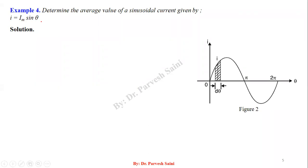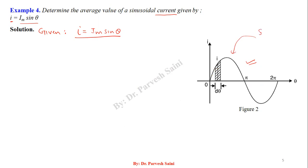Numerical 4: we are asked to find the average value of a sinusoidal current represented by i = Im sin(θ). Since the sine wave is symmetrical — positive from 0 to π and negative from π to 2π with equal magnitudes — the average over a complete cycle is zero. So we calculate the average value for the half cycle only.